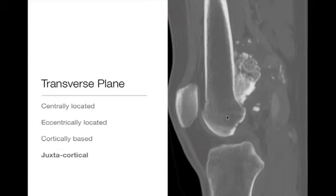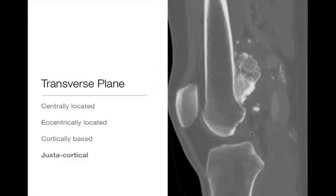As you can see on the CT scan, the cortex — the thick sclerotic line right here — is right up next to the tumor. The medullary space does not appear involved. Here we have a dense osteoid matrix in the tumor with a soft tissue component. This is a classic example of a paraosteal osteosarcoma occurring in a juxtacortical location about the distal femur.